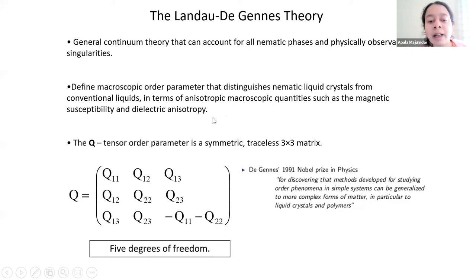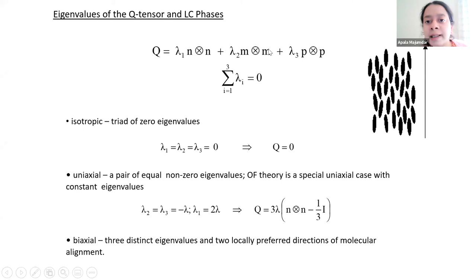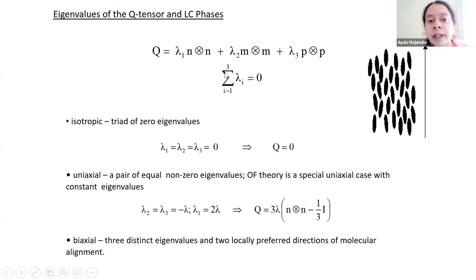The Landau-de Gennes theory describes the state of a nematic liquid crystal — the degree of orientational order — in terms of a macroscopic order parameter called the Q-tensor order parameter. For a mathematician, the Q-tensor order parameter is a symmetric, traceless, three-by-three matrix with five degrees of freedom. These five degrees of freedom contain information about the special directions of molecular alignment. It can be written in terms of its eigenvectors n, m, and p, and corresponding eigenvalues λ₁, λ₂, λ₃. It's a traceless matrix, so the sum of the eigenvalues is zero.